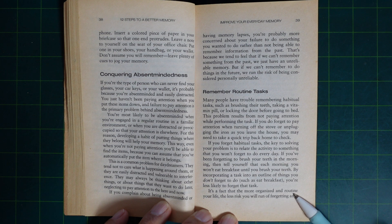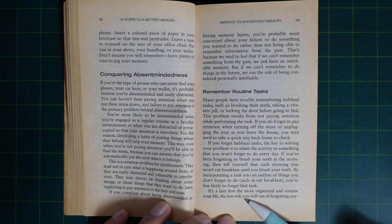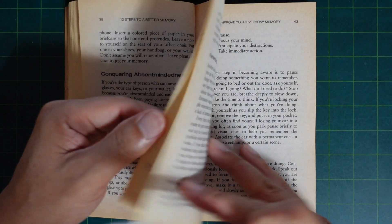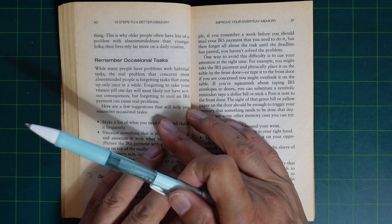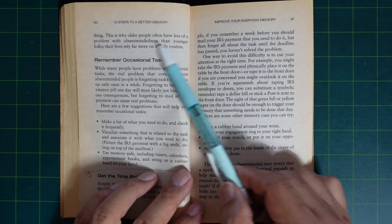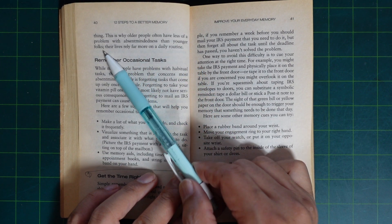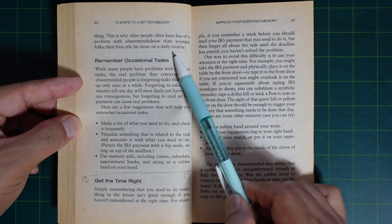It's no secret that the more organized and routine your life is, the lesser risk you will run of forgetting anything. That's why older people often have less of a problem with absent-mindedness than younger folks. Their lives rely far more on a daily routine.